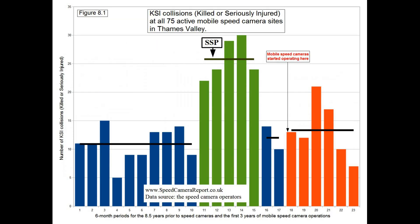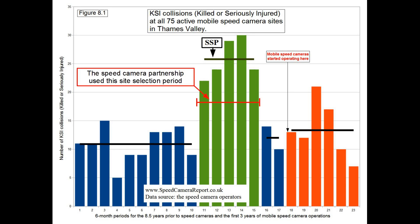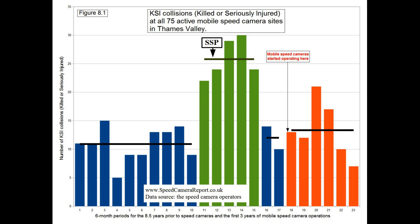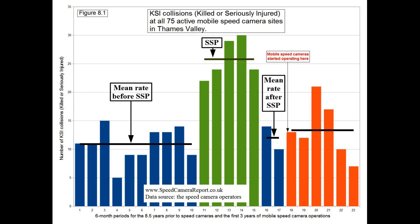So back to the speed camera sites. That data is telling us what happened at these sites. First, it's telling us that the speed camera partnership chose the two and a half year period, shown in green, to select these sites. Second, after choosing their sites, it took them a year to get permission from the Department for Transport to run their speed cameras. Third, and most importantly, collisions were occurring at around their mean rate before the SSP, and they return to around their mean rate at the end of the SSP. And it is that mean rate before and after the SSP that should have continued had they not run their speed cameras.